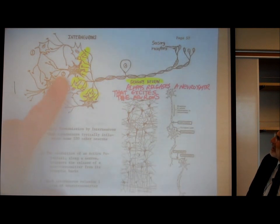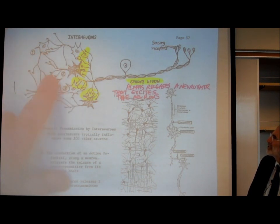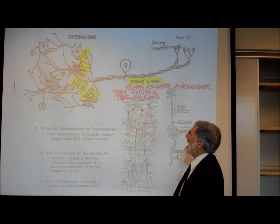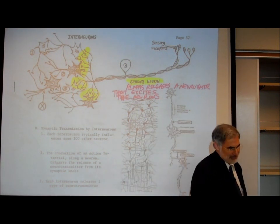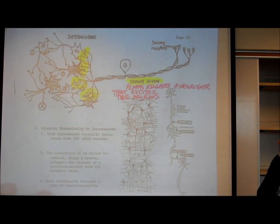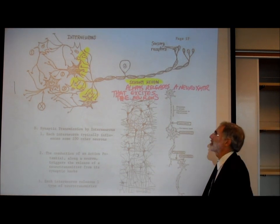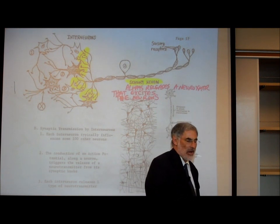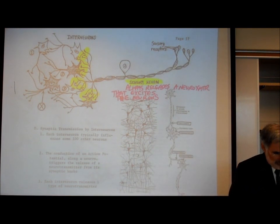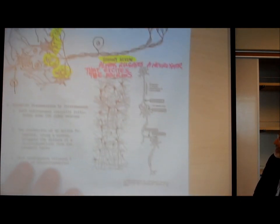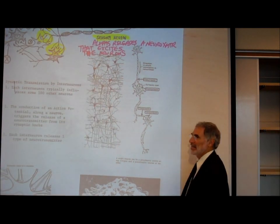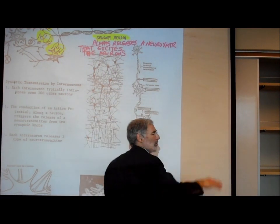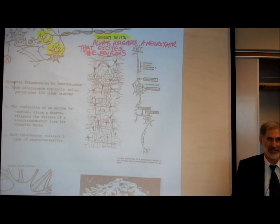Now I want to talk about the interneurons, which are in our spinal cord and brain, and synapse onto each other. Some interneurons are shown clear and others shaded — because some interneurons release chemicals that excite, and other interneurons release chemicals that inhibit. This photograph is an actual photograph of interneurons in the brain, and it looks like a spider web. They really just synapse all over, making it very difficult to analyze how our central nervous system works.